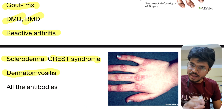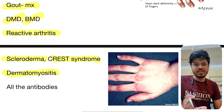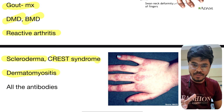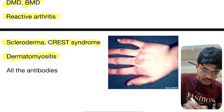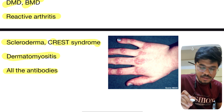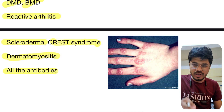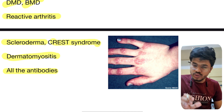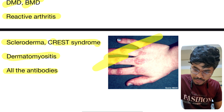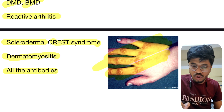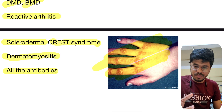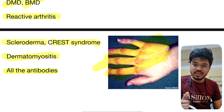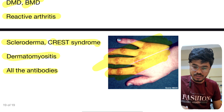Scleroderma and CREST syndrome — all the antibodies are important. Dermatomyositis — again an important topic; all antibodies in dermatomyositis are important: anti-Mi-2 antibody, anti-Jo antibody, etc. All the antibodies in rheumatoid are very very important — you have to know all the antibodies and their associated diseases.